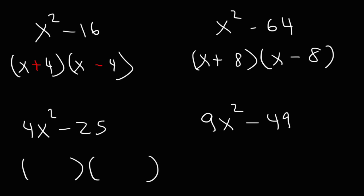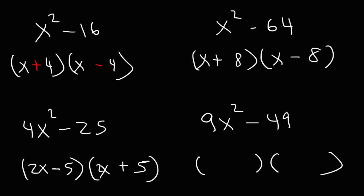For 4x squared minus 25: the square root of 4x squared is 2x, and the square root of 25 is 5, giving 2x plus 5 times 2x minus 5. For 9x squared minus 49: the square root of 9x squared is 3x, and the square root of 49 is 7, giving 3x plus 7 times 3x minus 7. That's how you factor a difference of perfect squares.